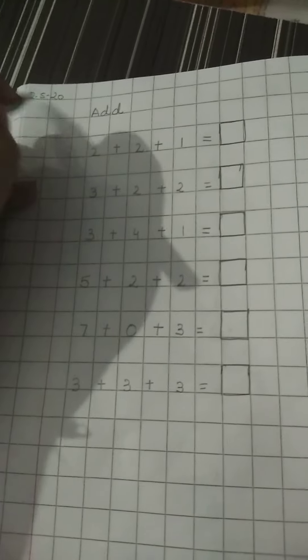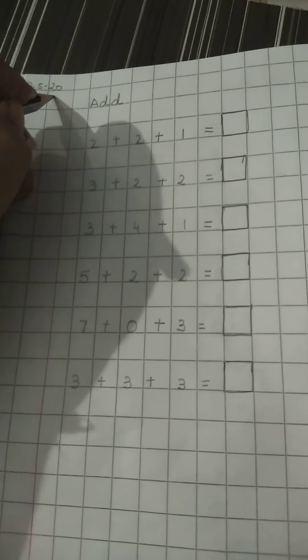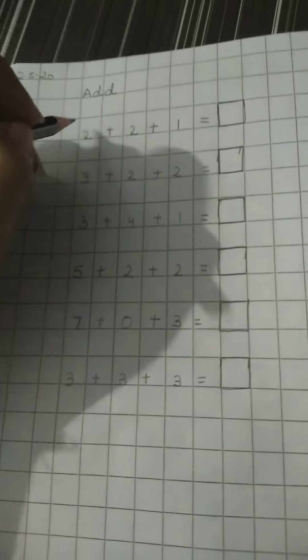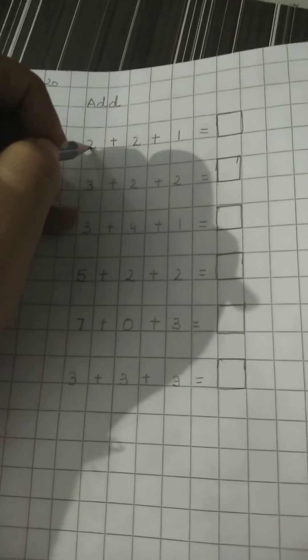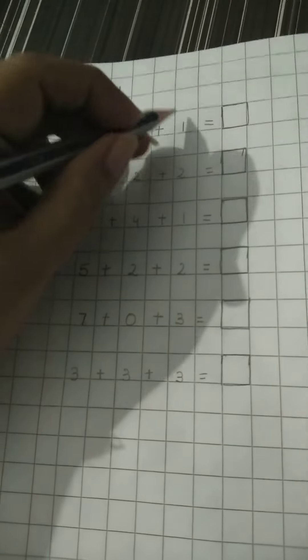Come to the next page now. Again write today's date. 2, 5, 20. Add. Now can you see these numbers? 2 plus 2 plus 1.